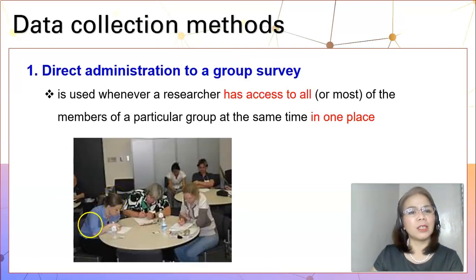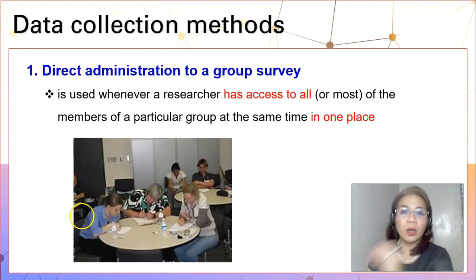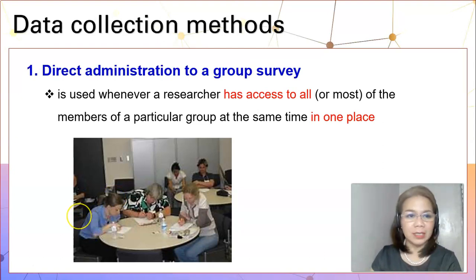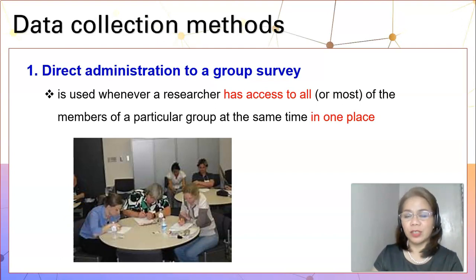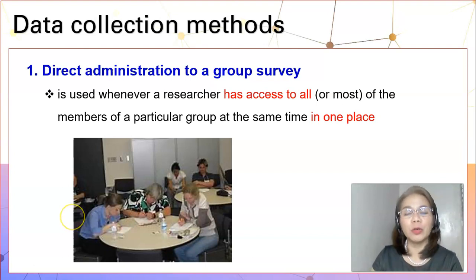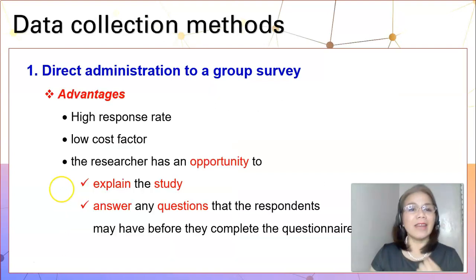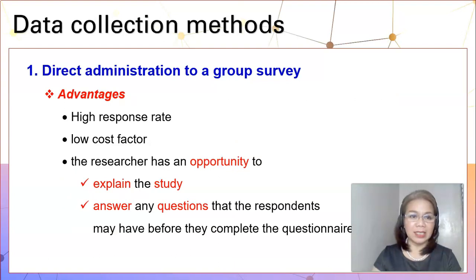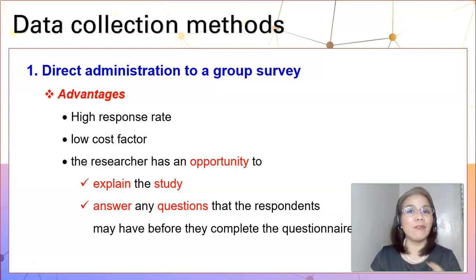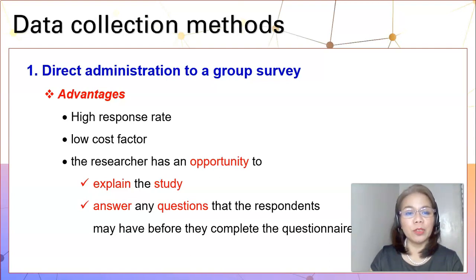Let's talk about the direct administration of the survey to a group or to the respondents. This method is used whenever you, as a researcher, have access to all or most of the members of a particular group at the same time in one place. The advantage is that you will have a high response rate. Of course, it will save you money and time. And you, as the researcher, have the opportunity to explain what the study is about.